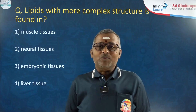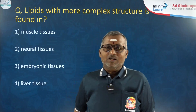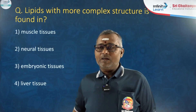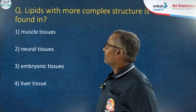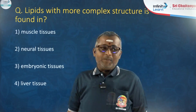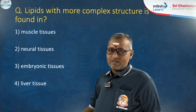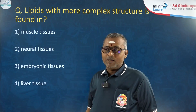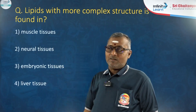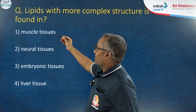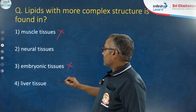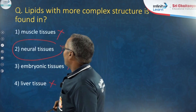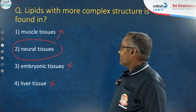Now let us see some objective type questions on lipids from previous NEET examinations. Question: Lipids with more complex structure are found in which tissue? Neural tissues have more complex lipids compared to other tissues, with examples like myelin and sphingomyelin. Muscle tissue, embryonic tissue, and liver tissue are not correct. The correct option is neural tissues.